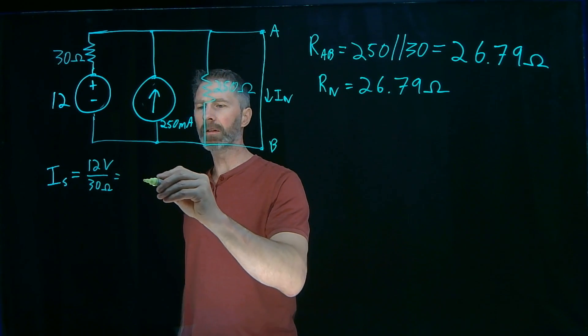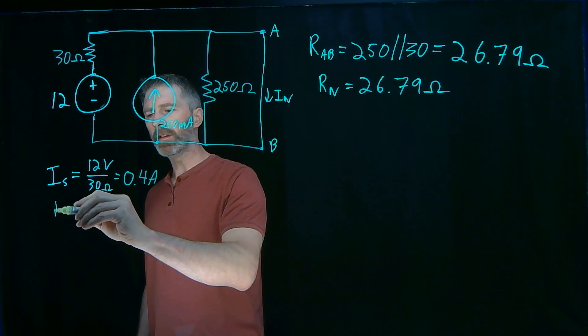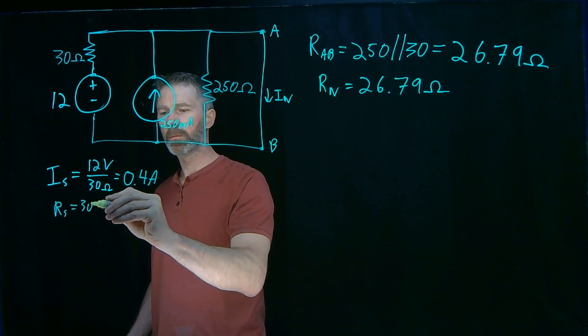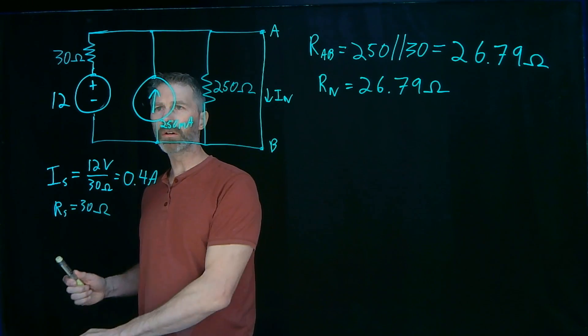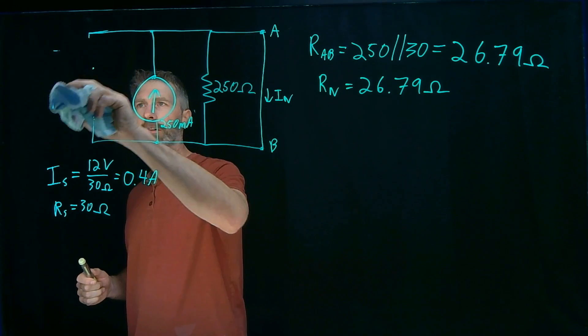So my current source is going to be 0.4 amps, and the resistance will just be that 30 ohm resistor. Okay, so I will replace this voltage source with the equivalent current source.